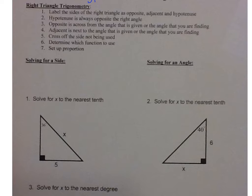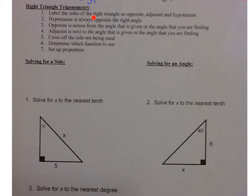All right, so when you do a right triangle trig, you're going to first label the sides. Label the sides of the right triangle. You want to label it as either opposite adjacent and hypotenuse. Hypotenuse is always opposite the right angle. Opposite, the opposite side is across from the angle that is given or the angle that you are trying to find. Adjacent is next to the angle that is given or next to the angle that you are trying to find. Cross off the side not being used. Determine which function to use. So you're going to think of your SOHCAHTOA. And then set up your proportion.